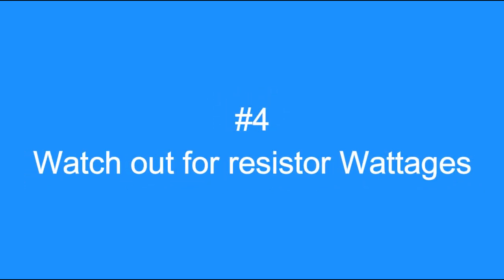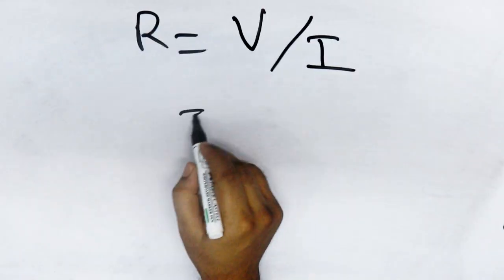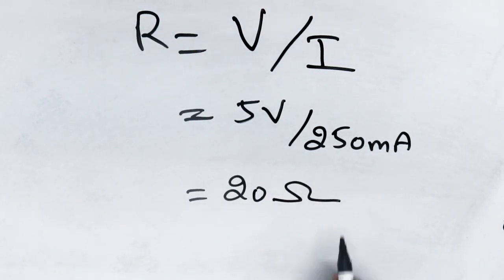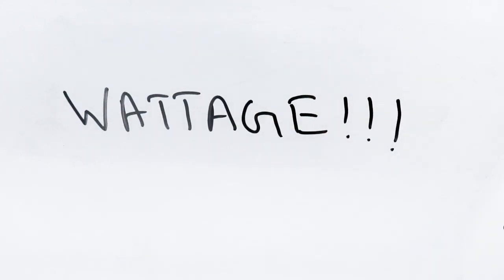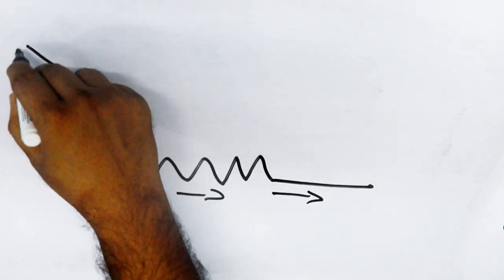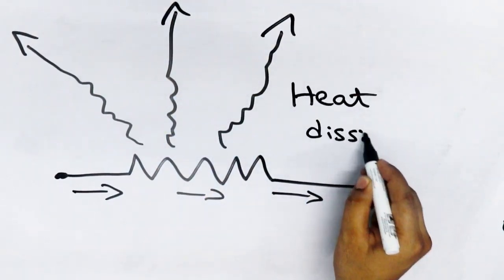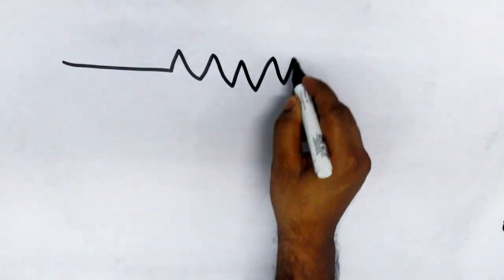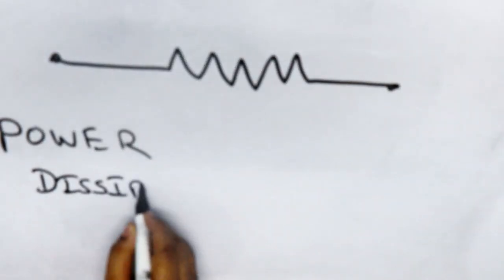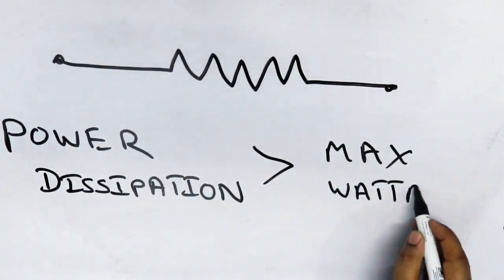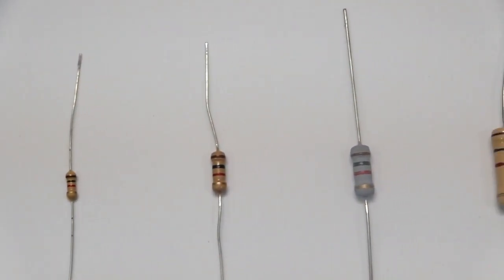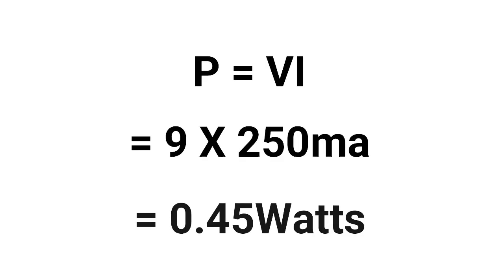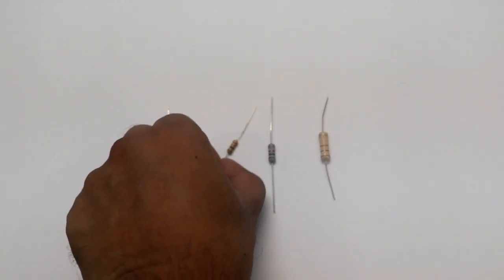Tip number 4: Watch out for resistor voltage rating. Almost every designer puts good effort into figuring out the resistor values that go into their circuit, but the voltage rating is often ignored. The voltage rating of a resistor means the maximum amount of power a resistor can safely dissipate as heat. If the dissipation exceeds the maximum voltage rating, the resistor is likely to fail and smoke. Higher the voltage rating, the bulkier the resistor will be. Pay attention to the power dissipation and choose the resistor that fits your need.